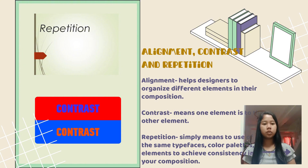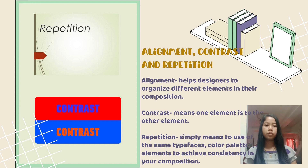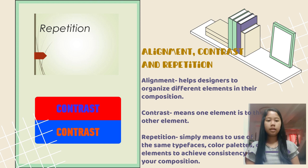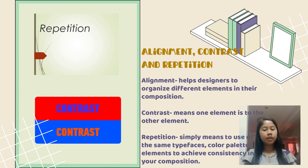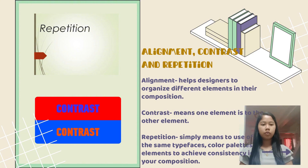Alignment helps designers organize different elements in their composition, creating a perfect pattern. Contrast means one element is opposite to another element — one part of your creation is brighter or sometimes darker than another. Repetition simply means the use of the same typefaces, color palettes, or elements to achieve consistency in your composition. This means if you are going to make another creation, you can use the same things you used before.